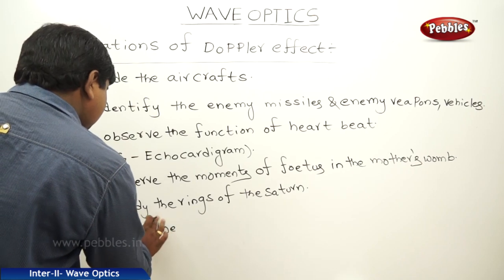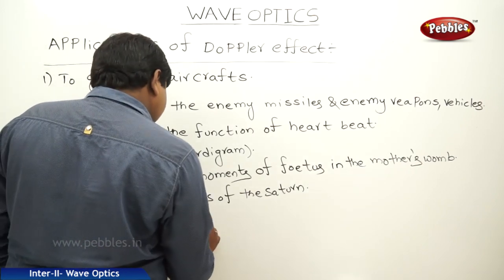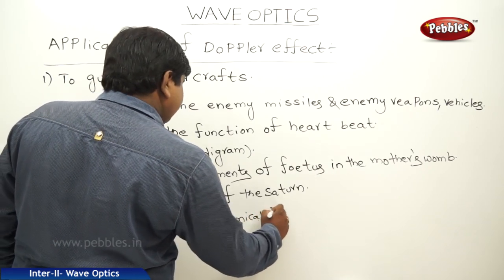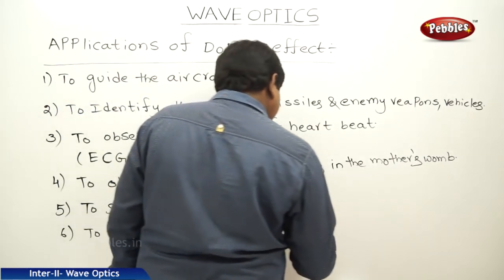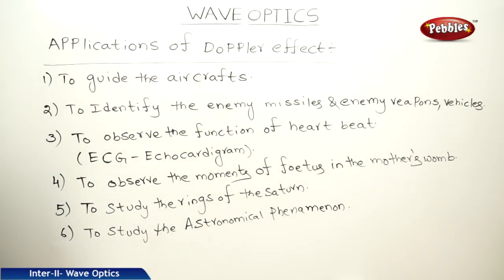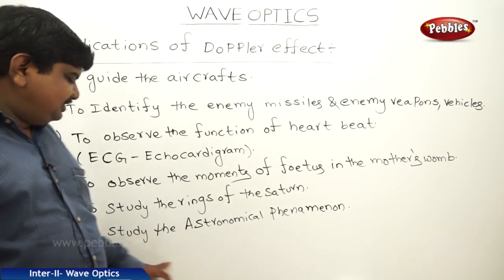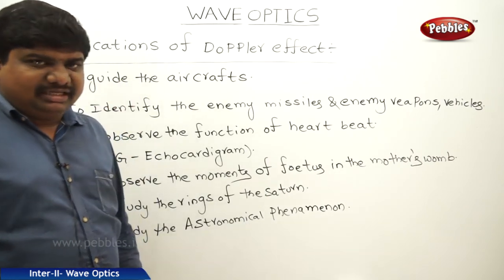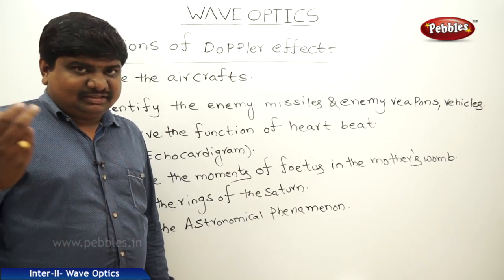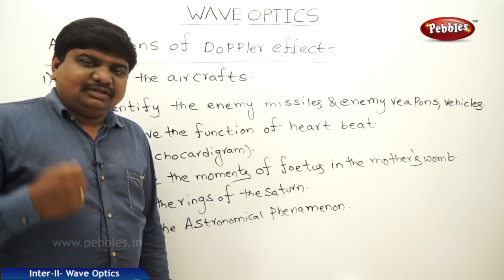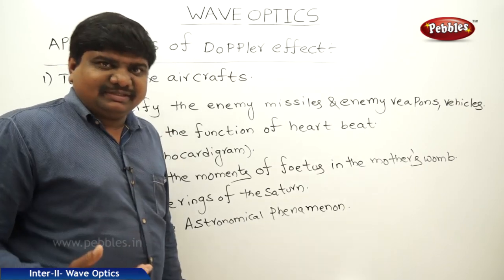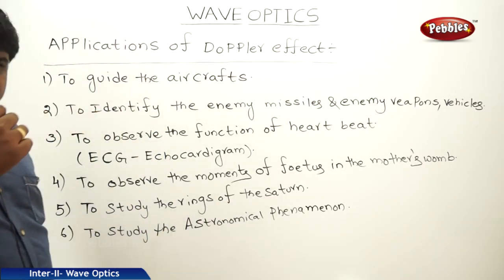Not only the rings of Saturn — any celestial object or astronomical study is based on the Doppler effect. The positions of the moon, sun, and earth during eclipses, collisions between comets and the earth's surface, and other astronomical phenomena are all observed using the Doppler effect.